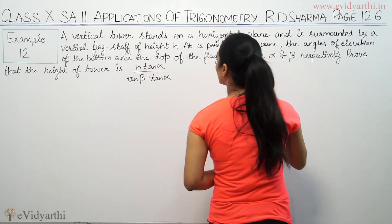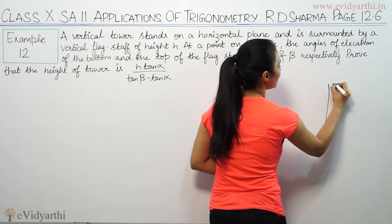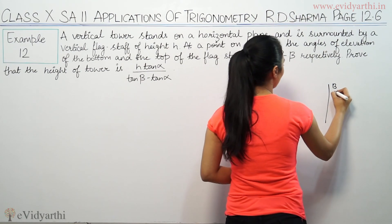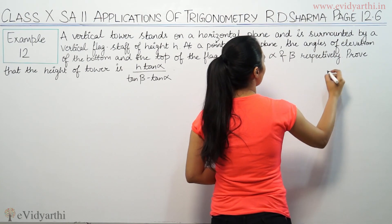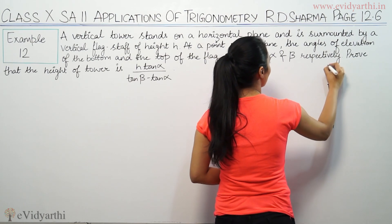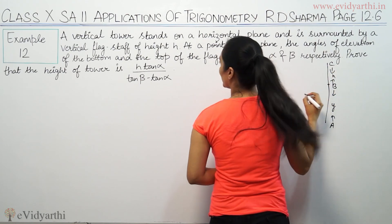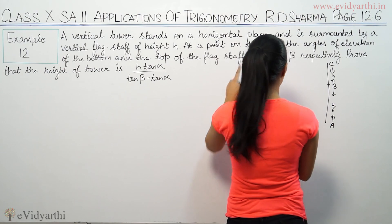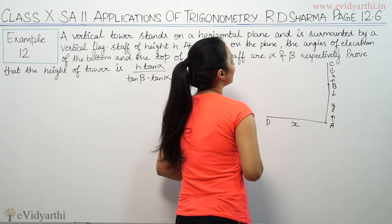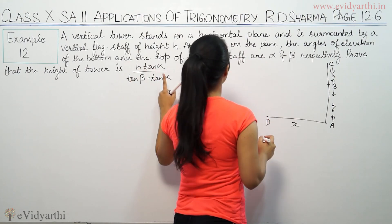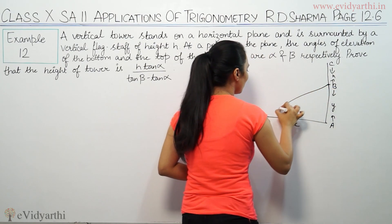The vertical tower stands on a horizontal plane — so this is the vertical tower. The height is not given, so let's say y is the height. It is surmounted by a flagstaff whose height is given as h. Suppose this point C is the top of the flagstaff. At a point on the ground, suppose this horizontal distance is x. The angle of elevation of the bottom of the flagstaff is alpha.